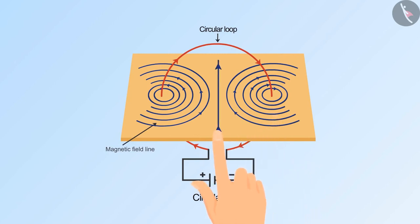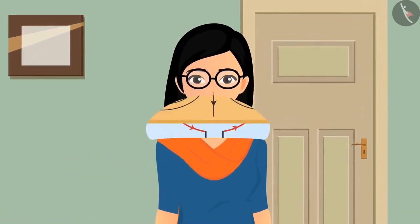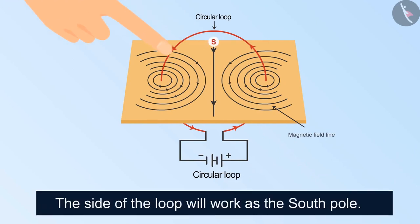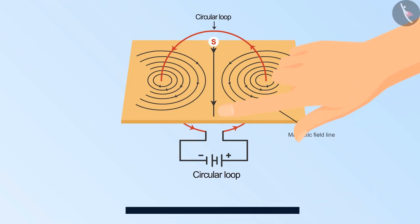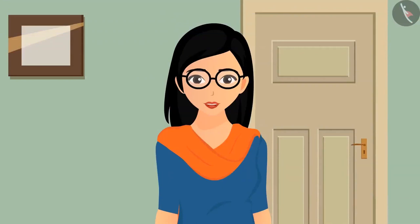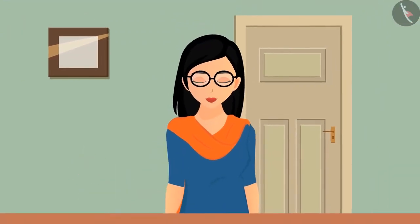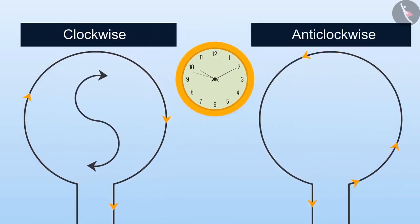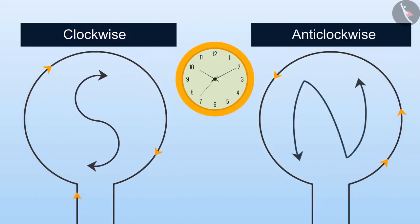At the center, the field lines will be straight — this is also the case with bar magnets. If you look at the apparatus from behind, the direction of the current will be reversed, and the field lines will be in the opposite direction. The side of the loop where field lines are going inwards acts as the south pole, and the side where field lines are coming outwards acts as the north pole. If the current is flowing in the clockwise direction, that side is the south pole; if flowing in the anti-clockwise direction, that side is the north pole.